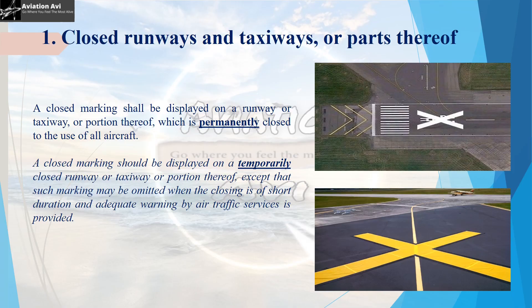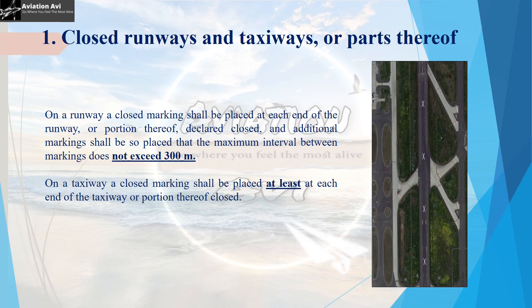Firstly, we will look at Closed Runways and Taxiways or Parts Thereof. A closed marking shall be displayed on a runway or a taxiway or parts thereof which is permanently closed to the use of all aircraft. A closed marking in case of temporary closure of runway or parts thereof can be omitted only when the closure is for a short duration and adequate warning is given by Air Traffic Services. On a runway, a closed marking shall be placed at each end of the runway or parts thereof declared closed, and additional markings shall be placed such that the maximum interval between the markings should not exceed 300 metres.